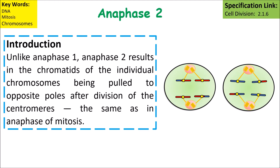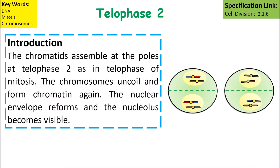Unlike anaphase one, anaphase two results in chromatids of the individual chromosomes being pulled to opposite poles after the division of the centromeres — the same as in anaphase of mitosis. At telophase two, the chromatids assemble at the poles. The chromosomes uncoil and form chromatin again, the nuclear envelope reforms, and the nucleolus becomes visible.